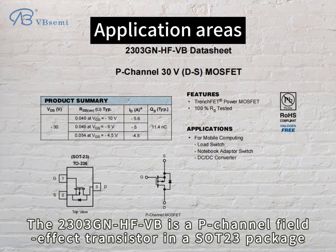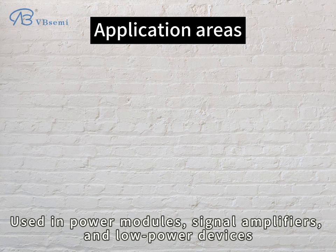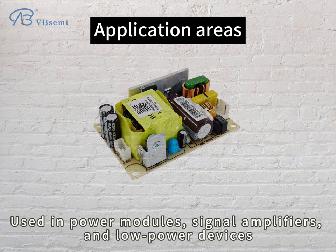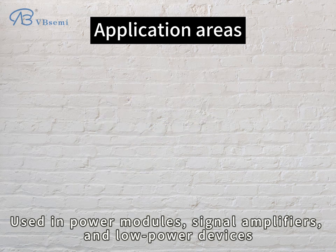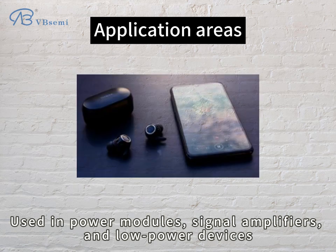The 2303 GNHF VB is a P-Channel Field Effect Transistor in a SOT-23 package. It is used in power modules, signal amplifiers, and low-power devices.